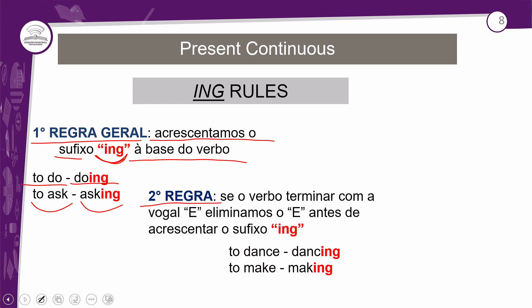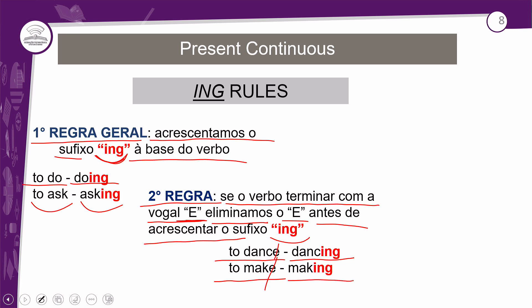A segunda regra: se o verbo terminar com a vogal -e, como no caso do to live, eliminamos o -e antes de acrescentar o sufixo -ing. Exemplos: to dance → drop the -e → dancing (dançando); to make → drop the -e → making (fazendo). To make fica making, sem o -e.